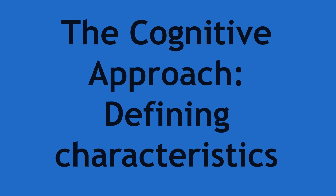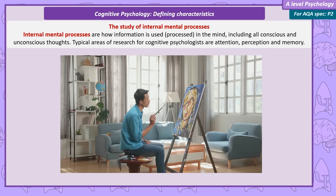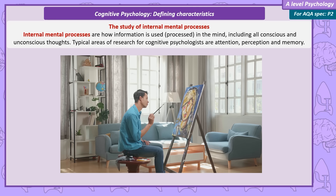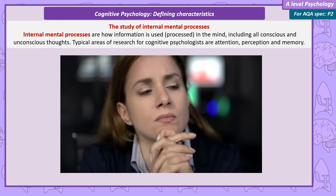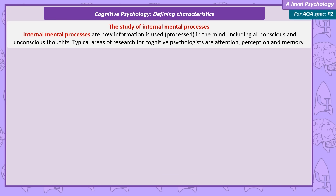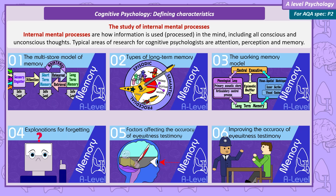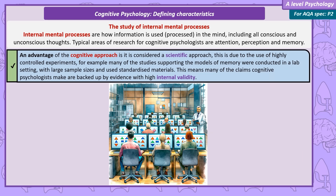The cognitive approach — defining characteristics. Cognitive psychologists argue that behaviour is the result of internal mental processes, and psychological research should be focused on studying those internal mental processes. As mentioned in the introduction, internal mental processes are how information is used or processed in the mind — in other words, all the conscious and unconscious thoughts we have. Common areas of research for cognitive psychologists are attention, perception, and memory. Most examples in this video will focus on memory, as memory is an entire unit of study at A-level, and understanding it in this context should help clarify that unit.